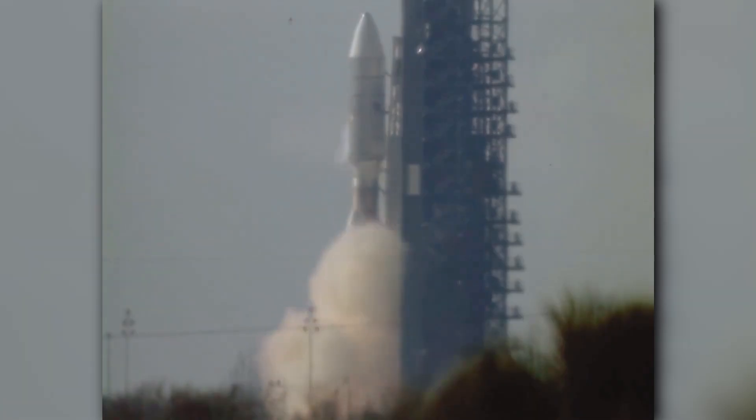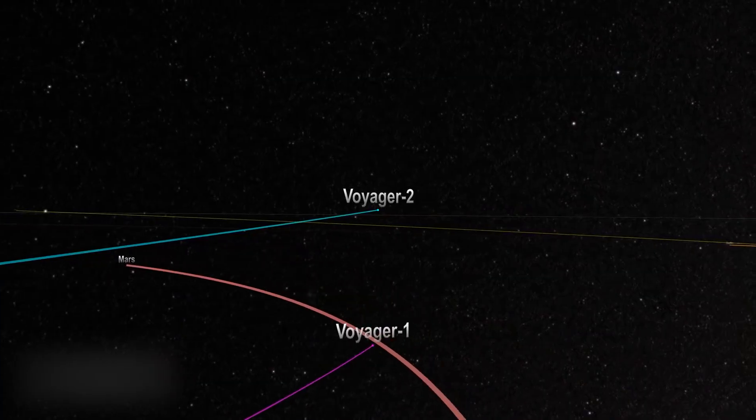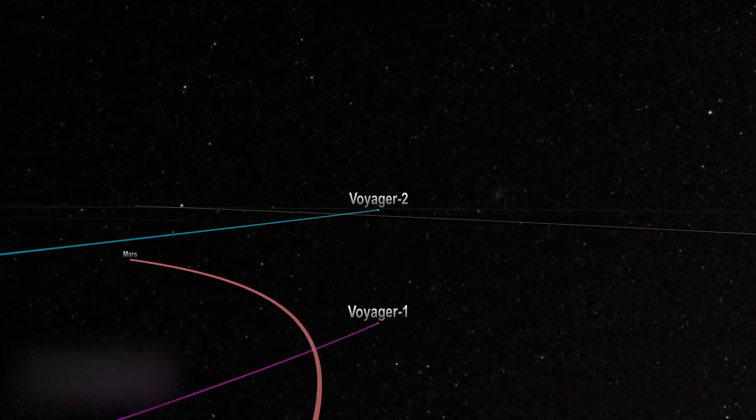Fifteen days later, on August 20th, 1977, Voyager 2 joined in, initiating a twin odyssey into the cosmos.